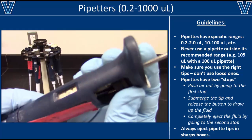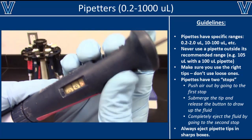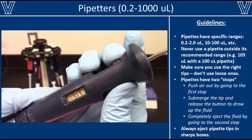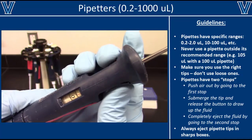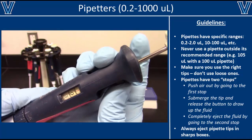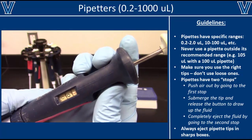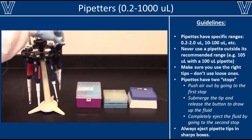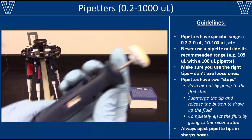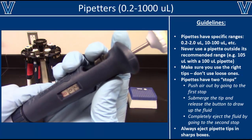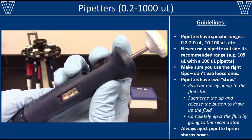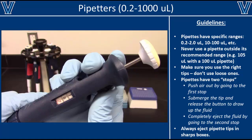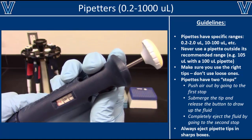To change the volume setting on a pipette, rotate the black knob near the top, as shown here. Note that since this is a P1000 pipette, one of the digits is shown in red to indicate milliliters. The other two digits are shown in black for microliters. Right now the pipette is set to 1 ml. On a P20 pipette, one of the digits is red to represent nanoliters, while the other two digits are shown in black for microliters. In this example, the pipette is set to 18.7 microliters.